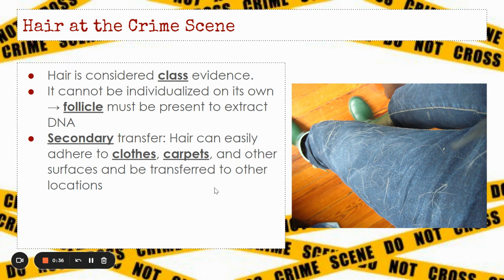Often, hair is involved in secondary transfer. That's when hair can easily adhere to clothes, carpets, and other surfaces, and then be transferred to other locations. For example, if you're at home, your dog sits on your lap, leaves the dog hair behind, and then you come to school, that dog hair could be found on the floor of school. That doesn't mean the dog was there — that means the hair was involved in secondary transfer. This is particularly common with animal hair.